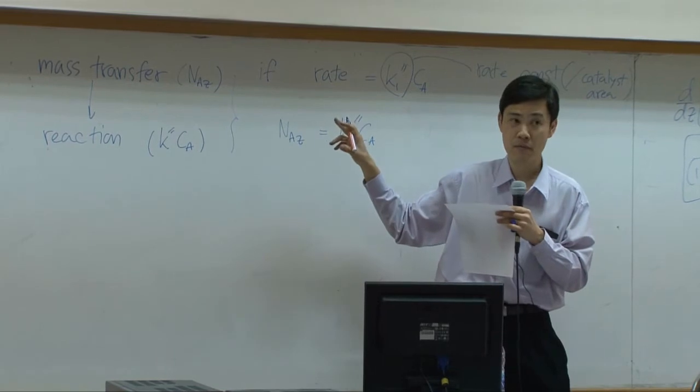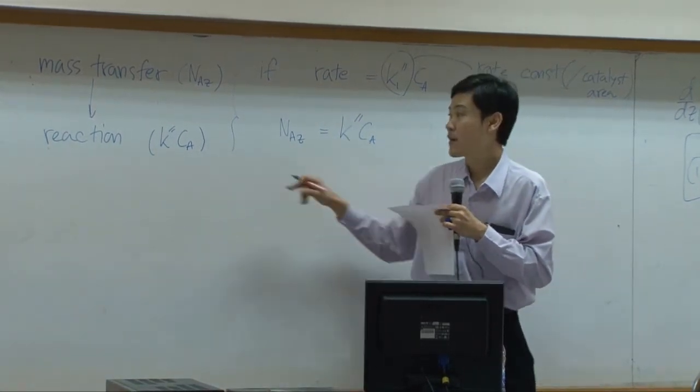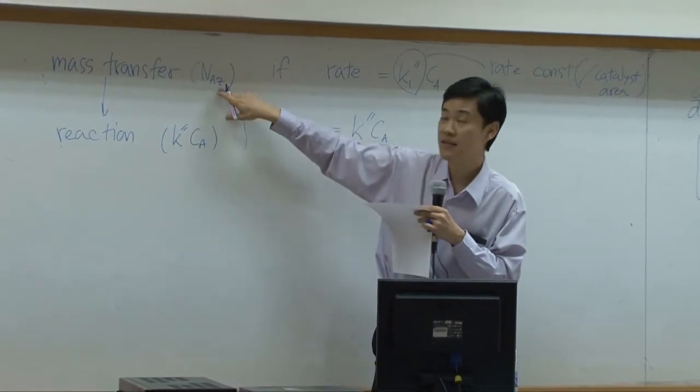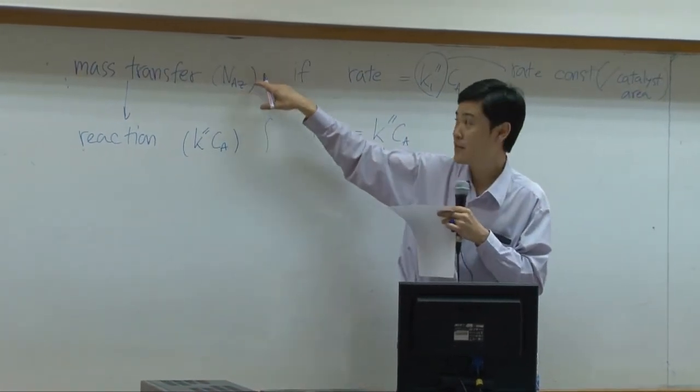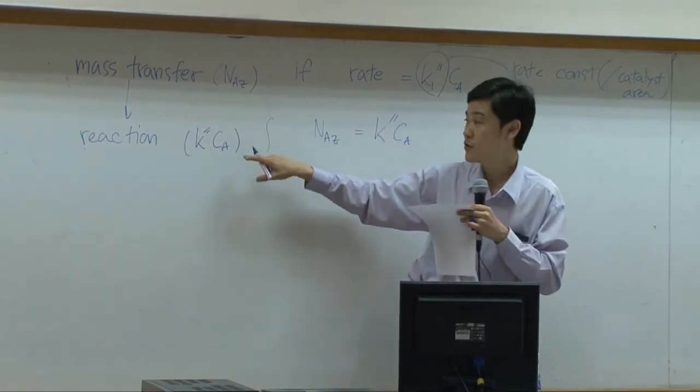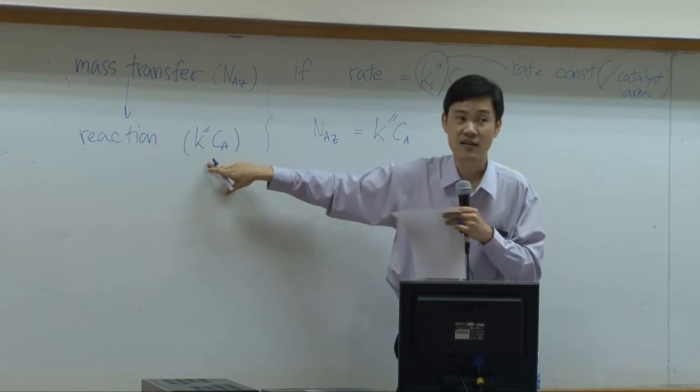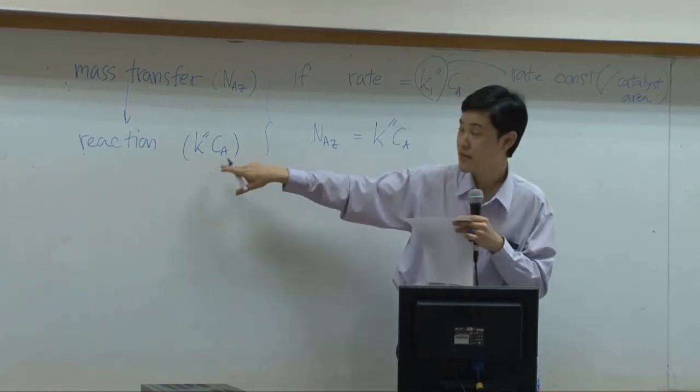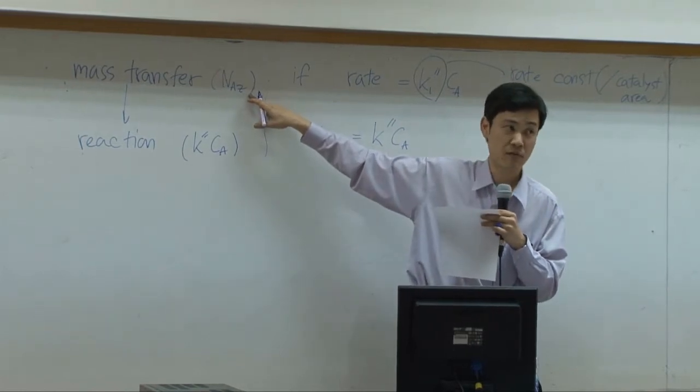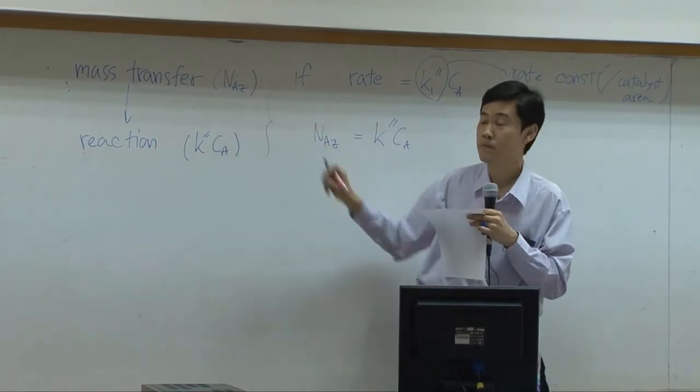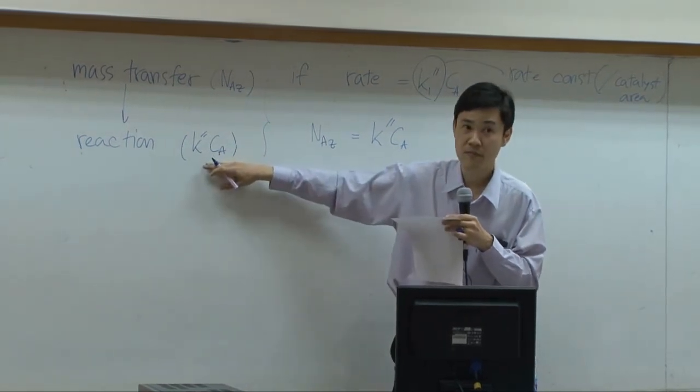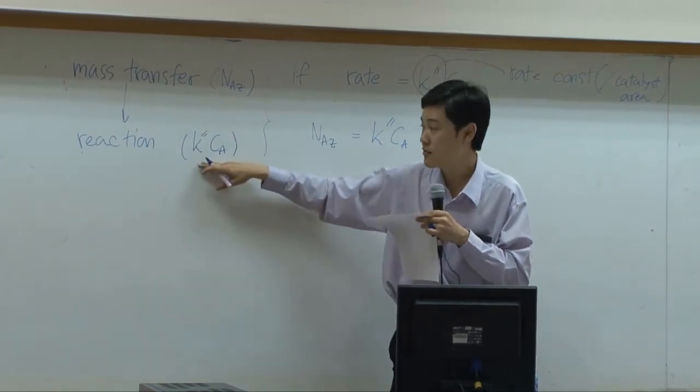Concentration of A depends on how fast this mass transfer process supplies A to the surface. So this rate is not a constant number - it depends on concentration. In other words, it depends on mass transfer as well.